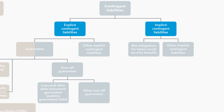The most common form of explicit contingent liabilities are loan and other debt instrument guarantees that, for example, a government issues to a state-owned enterprise.